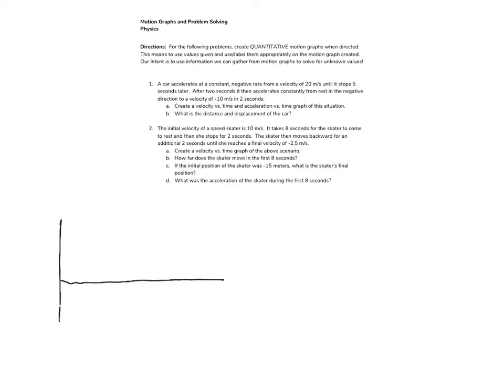So far we've just been focused on graph shapes, but we want to know how the motion of the object looks based on known values that we have. If we look at this first problem, we're being told that this car is accelerating at a constant negative rate from 20 meters per second.